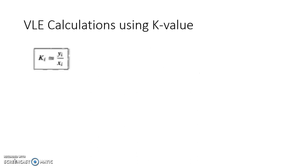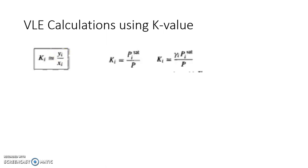A vapor-liquid equilibrium relation given by Raoult's law or modified Raoult's law can be converted into ki = yi / xi, where ki is the volatility, which is the ratio of mole fraction of component i in the vapor phase to that in the liquid phase. Using Raoult's law: yi·P = xi·Pi*, or modified Raoult's law: yi·P = xi·γi·Pi*. This gives ki = Pi*/P or ki = γi·Pi*/P respectively.